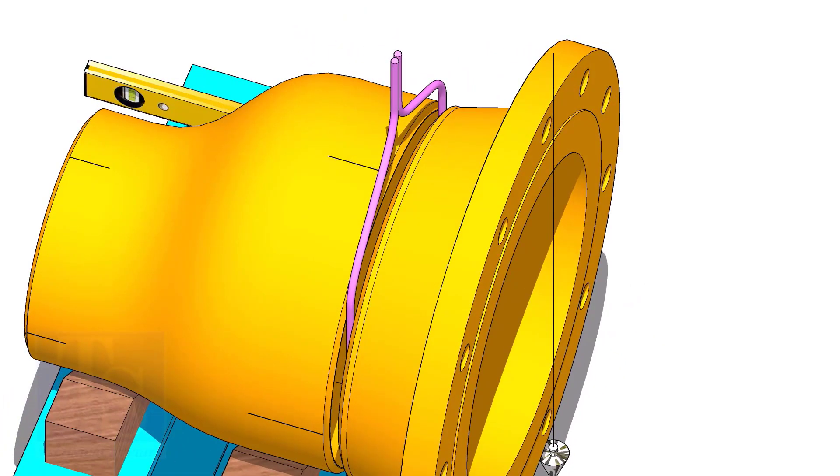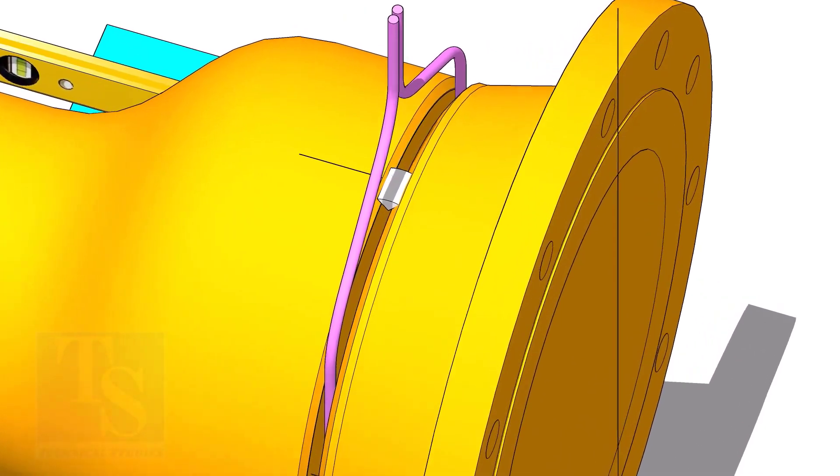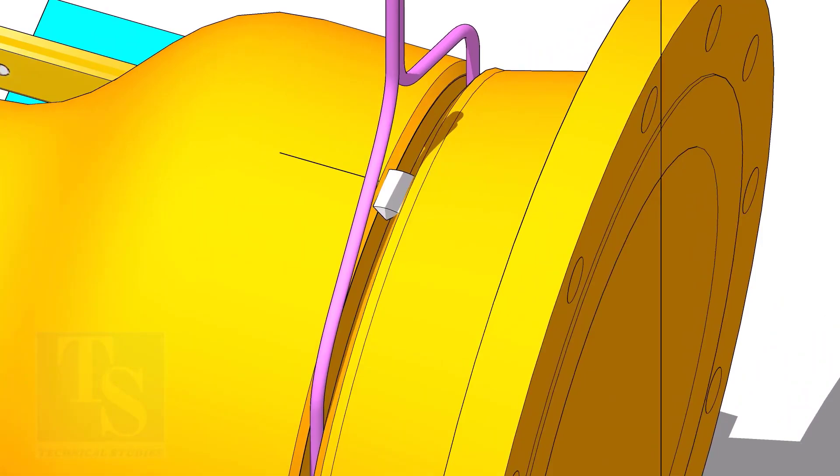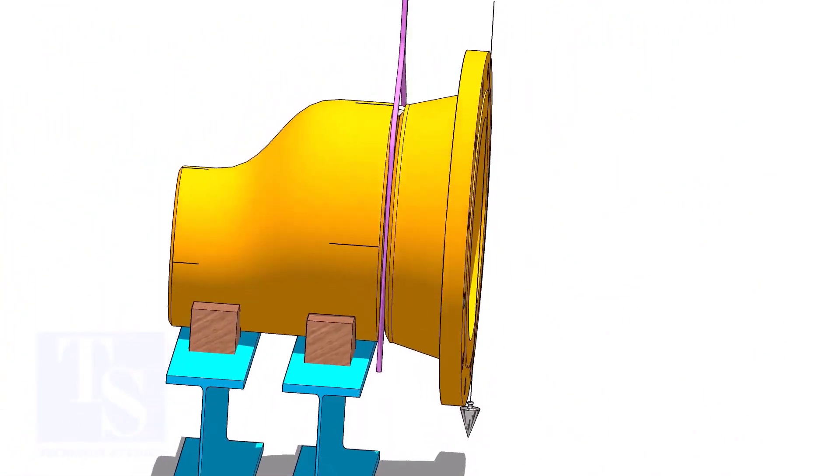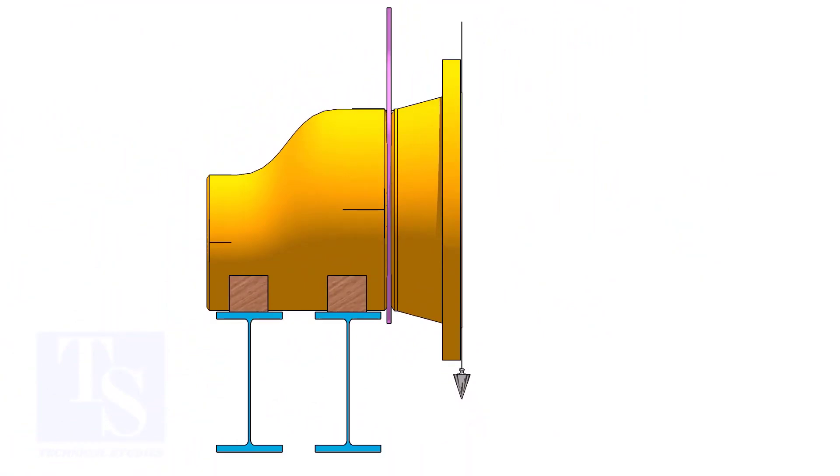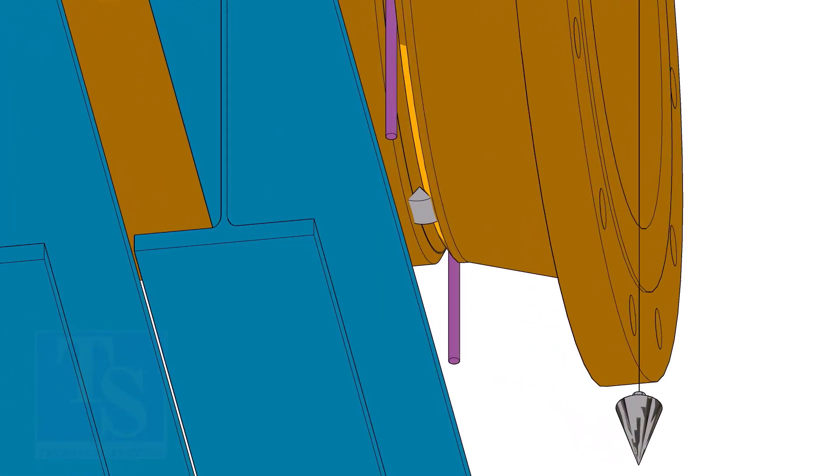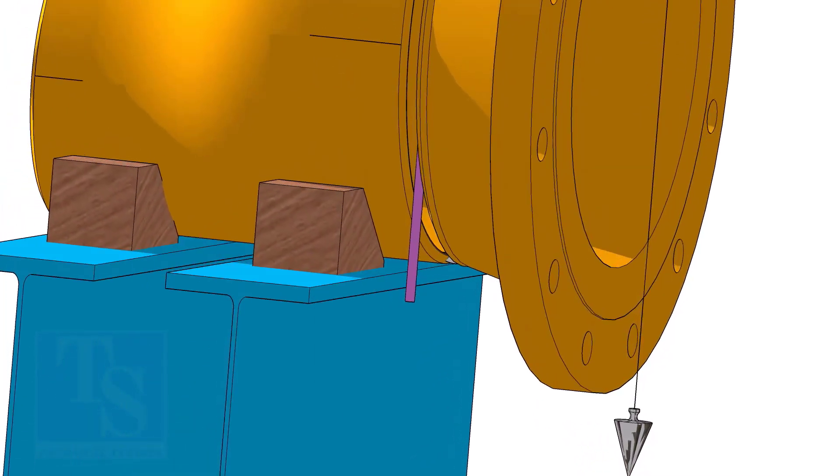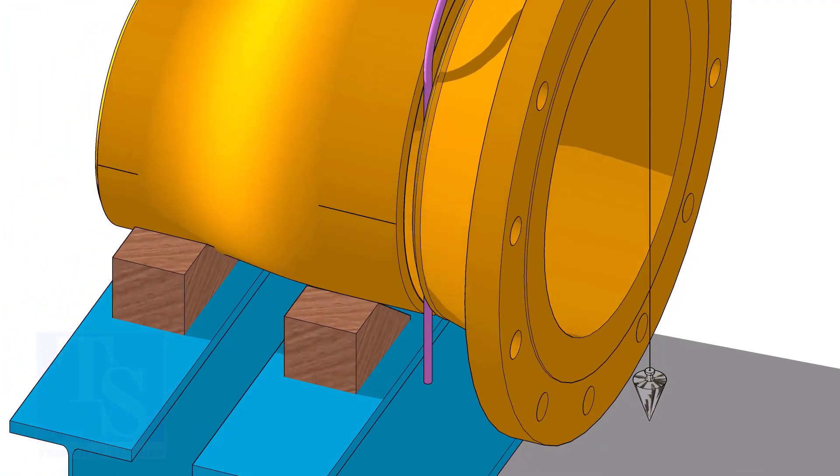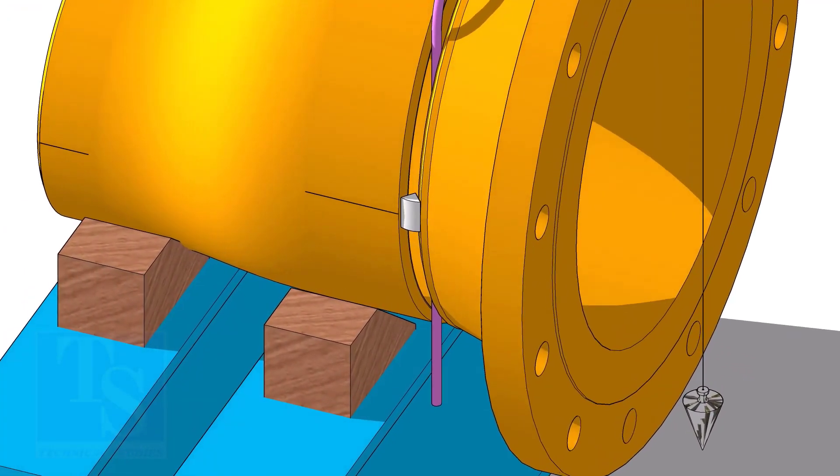Tack weld on the top side of the joint. Check the vertical plumbness, if correct, tack weld at the bottom side. If the gap is correct, tack weld on sides.